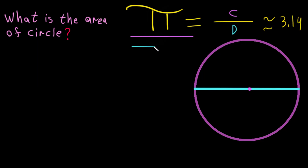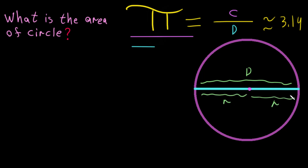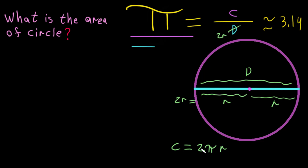D is the distance from this point to this point passing through the origin. If we split D, we get R on each side, so D equals R plus R, which is 2R. The relationship between circumference, pi, and diameter gives us C equals pi times 2R, so C equals 2πR.